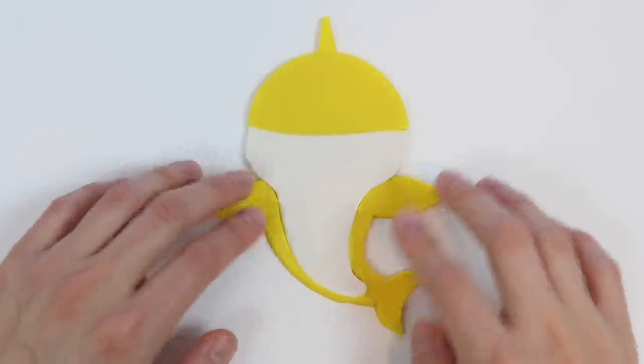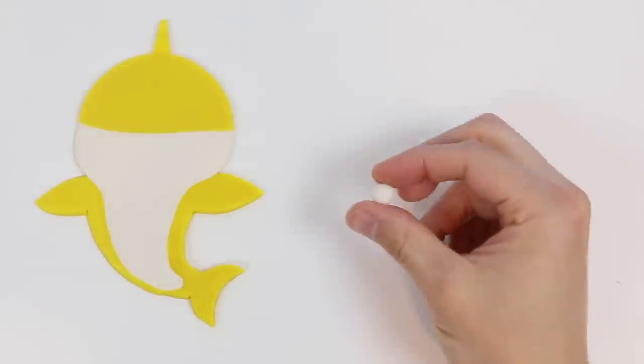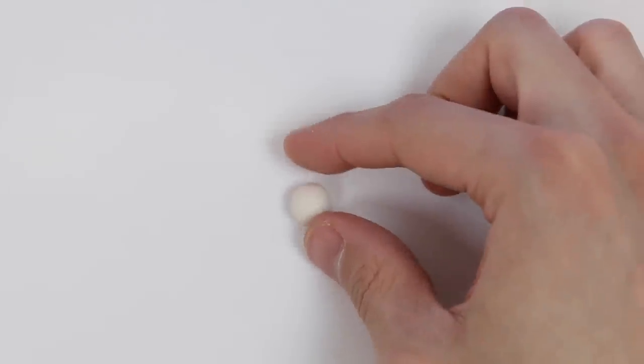Perfect. Here's our yellow baby shark. Now let's create the face. Start by using a little bit of white Play-Doh.